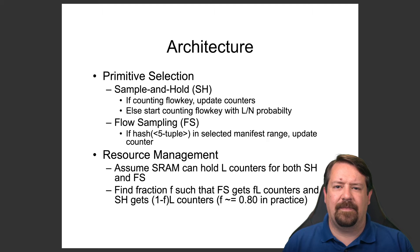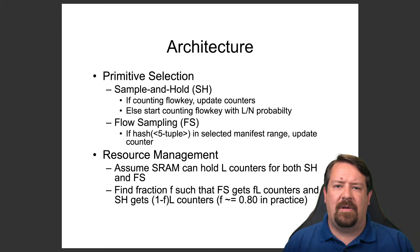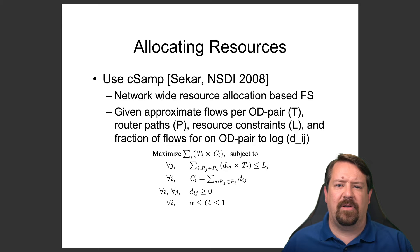On the other hand, we have flow sampling. In flow sampling, the flow key is hashed and is only tracked if the hash falls in a selected range. For those not familiar with hashing, it's a way of permutating a set of bits in a deterministic manner while distributing the output uniformly over the range supported by the hash function. The idea is to get a uniform sampling of flows and then track every packet matching those flows. On the resource side, we assume the SRAM can hold L counters, shared by the two different primitives. The authors then look at how to allocate resources across the network, examining input-output pairs of traffic flows.